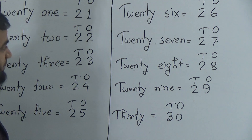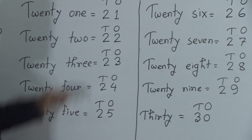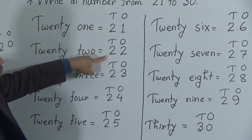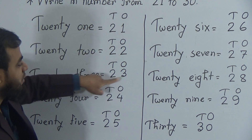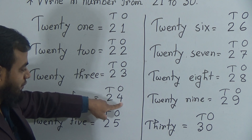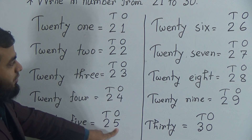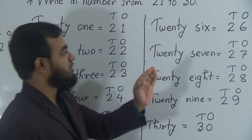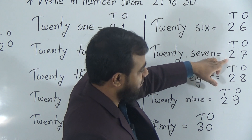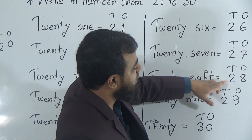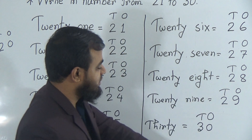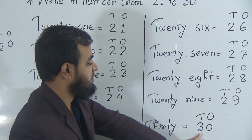Let's look at all the numbers again: 21 — two and one; 22 — two and two; 23 — two and three; 24 — two and four; 25 — two and five; 26 — two and six; 27 — two and seven; 28 — two and eight; 29 — two and nine; and the last number today, 30 — three and zero makes 30.